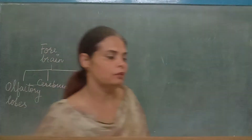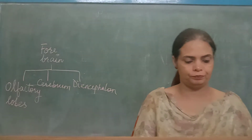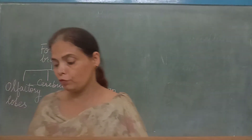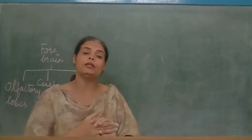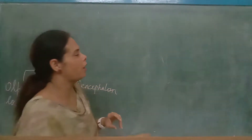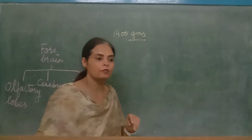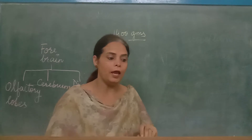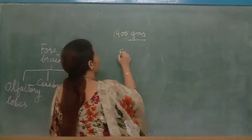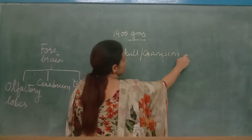To make you understand in a better way, I have got a model of the brain. Now these are the external parts of the brain. Before we do the internal structure, let me tell you about the external structure. Your brain is about 1400 grams in weight, and it is present in the skull region. The skull or cranium protects your brain.